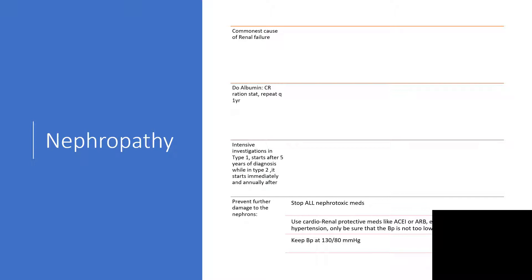Nephropathy is the common cause of renal failure. What we do here is an albumin-to-creatinine ratio every one year. The investigation will start after five years of diagnosis in type 1, while in type 2 it starts immediately. In both type 1 and type 2, it is appropriate to test the albumin-to-creatinine ratio every year.